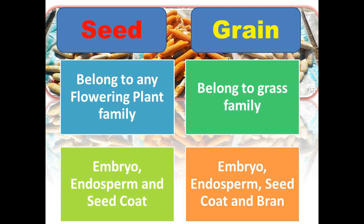Generally, seed has three basic components: embryo, endosperm, and seed coat. Whereas grain has four components. Cereal grain has four components: embryo, endosperm, seed coat, and bran. So bran is an additional component in grain that is not present in other seed types.